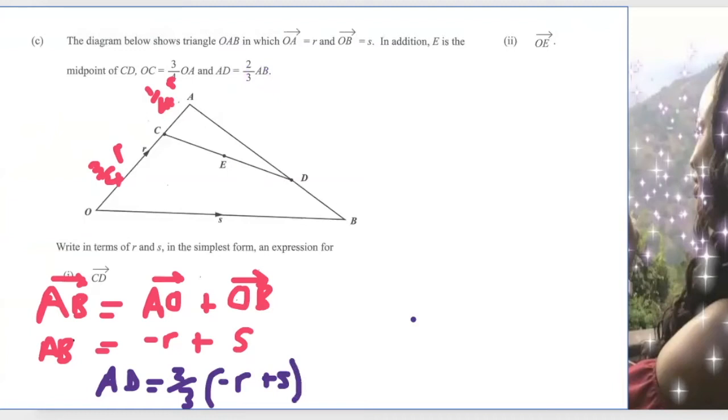And you can clear the brackets. So I can rewrite this as AD equals two-thirds times minus R. That's going to give me minus two over three R, and two over three S. So that's AD.